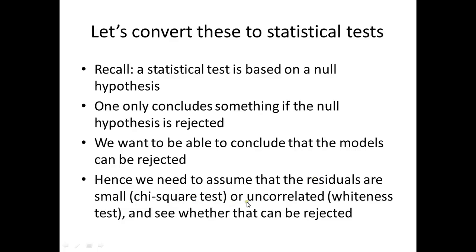The other problem is that the residuals could be correlated. Since we want to find out if that is the case, we have to assume the opposite in the null hypothesis — that the residuals are not correlated. Then we see whether we can reject that null hypothesis. This is tested by a whiteness test, a Durbin-Watson test, or a runs test, or something of that sort.